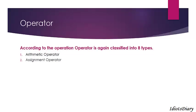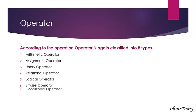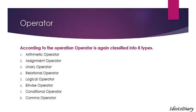The categories are as follows: first is arithmetic operator, second is assignment operator, third is unary operator, fourth is relational operator, fifth is logical operator, sixth is bitwise operator, seventh is conditional operator, and eighth is comma operator. We will discuss about these operators one by one.